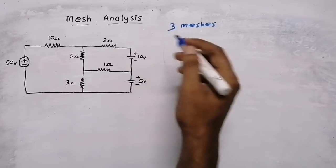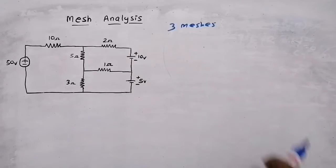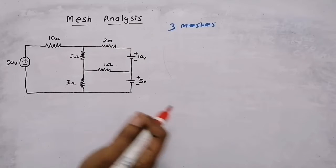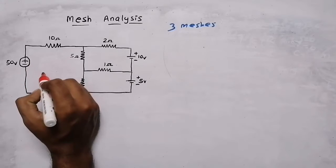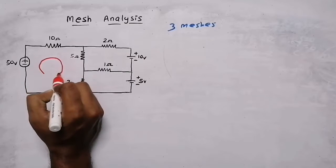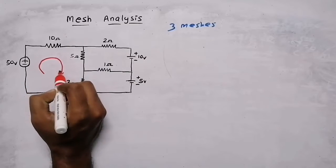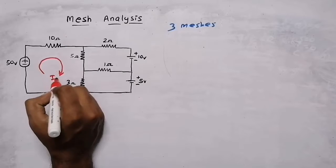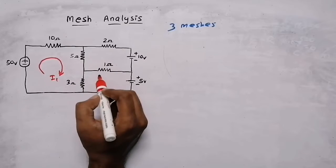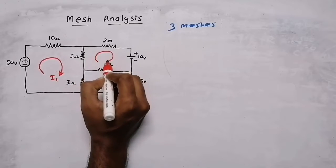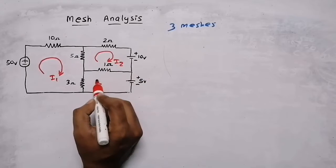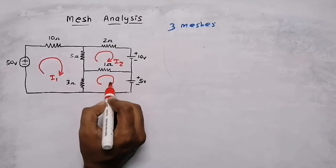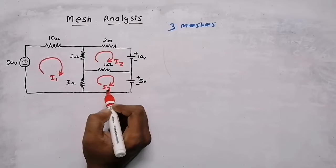If three meshes are there, then there will be three mesh equations. In step two, you need to assume a current is going in clockwise direction. So this is mesh one, so my current is I1. Here this is mesh two, so this is my current I2. And here this is mesh three, so my current is I3.